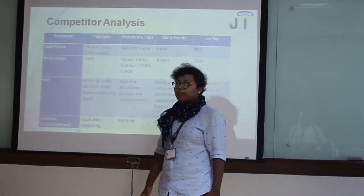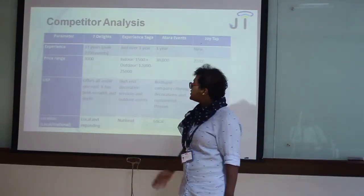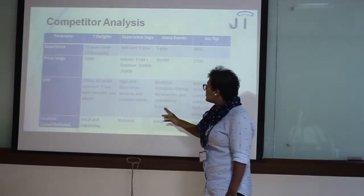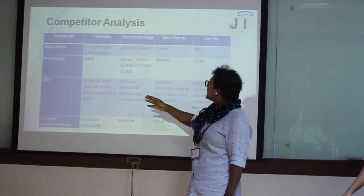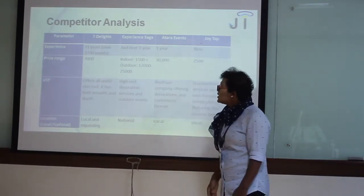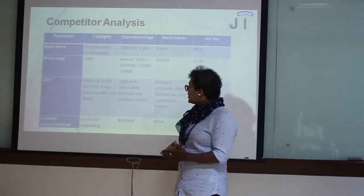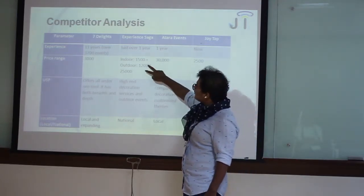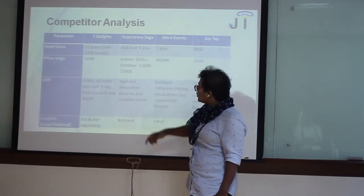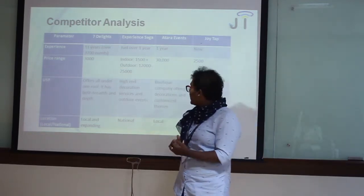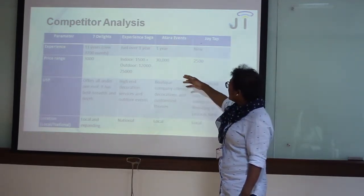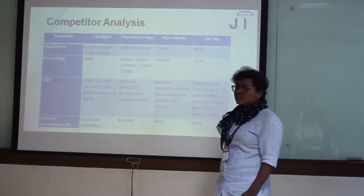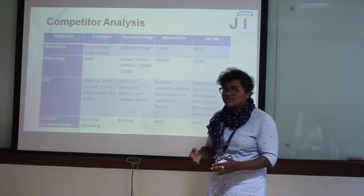Competitor analysis is based on four parameters: experience, price range, USP, and location. Our three competitors are 7Delight, Experience Aga, and Atara Eagles. 7Delight has seven years of experience and offers all services under one roof. Experience Aga's price range is of two kinds — indoor and outdoor — and they focus on high decorations. Atara's price range is very high and they are also focused on decoration and customised decoration.